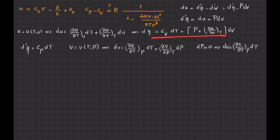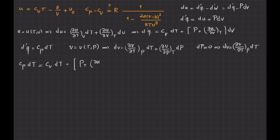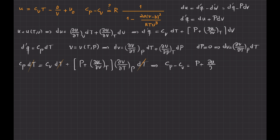Going back to the generic equation and applying it to a constant-pressure process, I replace D-prime Q with C_P dT on the left, and substitute dV with the partial of V with respect to T at constant P, times dT. Dividing both sides by dT and moving C_V to the other side gives the famous thermodynamic relation: C_P minus C_V equals P plus the partial of U with respect to V at constant T, multiplied by the partial of V with respect to T at constant P.